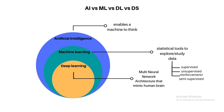In deep learning, we have a few key techniques. First, ANN or Artificial Neural Network. Second, CNN or Convolutional Neural Network. And third, RNN or Recurrent Neural Network. For general problems we use ANN; for image-related problems we use CNN; and for time series data — such as data recorded over hours — we use RNN. There are also advanced techniques like transfer learning.